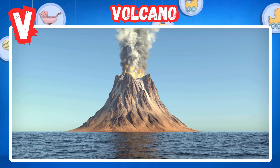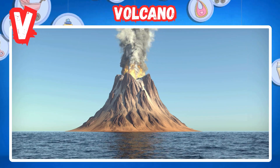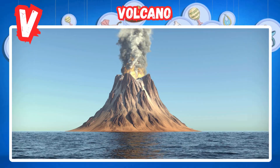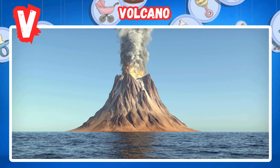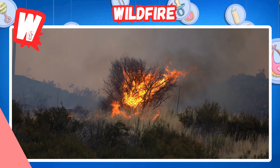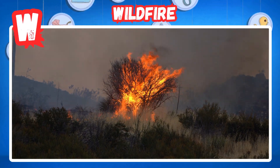V is for volcano. Melted rock erupts from the ground. Ash and stones fall around it.